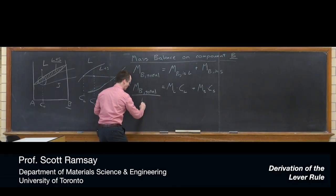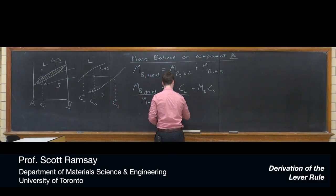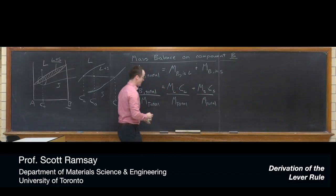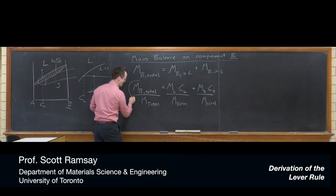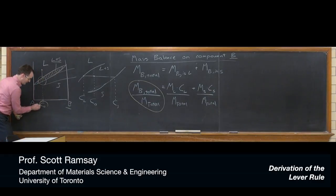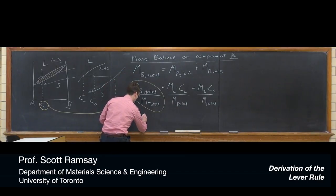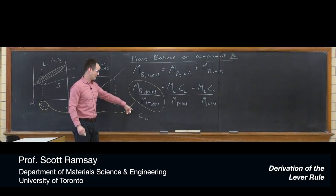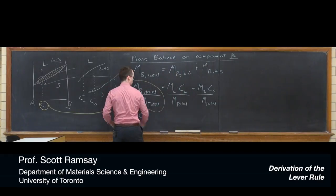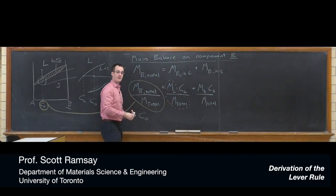And I'll just write this out here again for completeness. Now, what we can do is we can go and divide both sides by the total mass of the system. We're just going to divide both sides by total mass. And we should recognize a couple of terms. So first of all, what is mass B divided by mass total? Well, it's nothing more than the overall composition, isn't it? So we can replace this now with C0. That's the amount that's expressed in weight percent B. It's the fraction of B in the total.